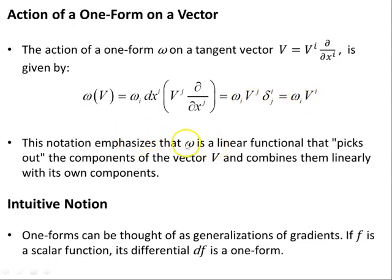This notation emphasizes that ω is a linear function that picks out the components of the vector V, so to speak, and combines them linearly with its own components. So you're going to sum this over i, which might go from one to n, depending on the dimension of your manifold.